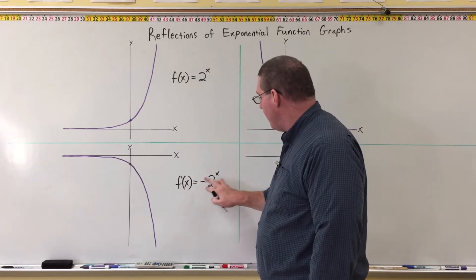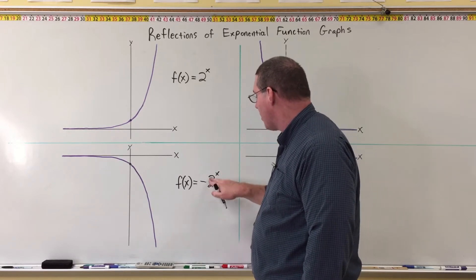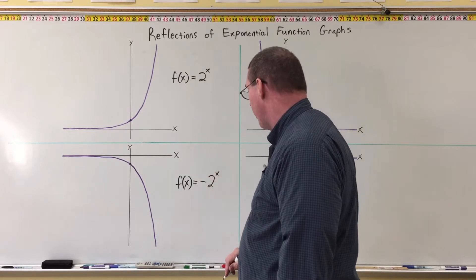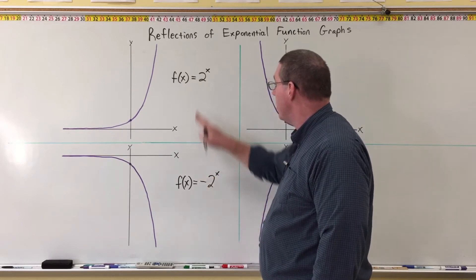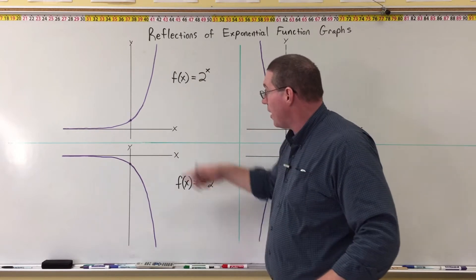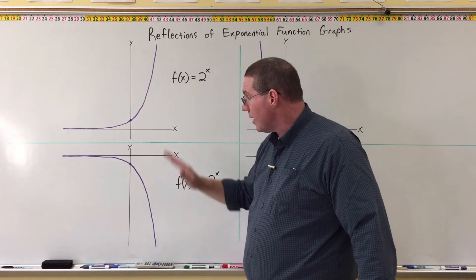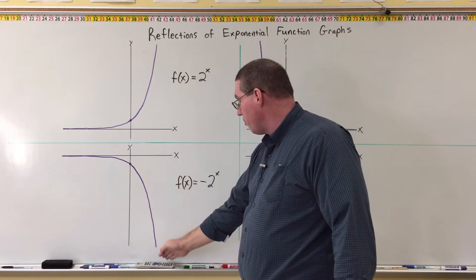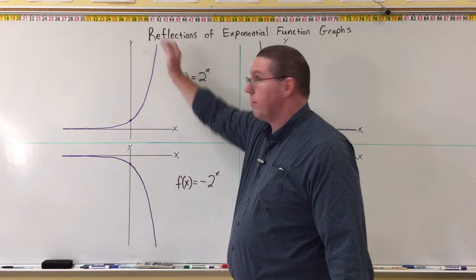When there is a negative in front of the 2^x — and it's not in parentheses on the base, that's a completely different story — we have 2^x but it is a negative function instead of a positive function. What this negative does is it reflects the graph vertically across the x-axis. It still goes flat to the left and steep to the right, but now it goes steep in a negative direction instead of a positive direction.